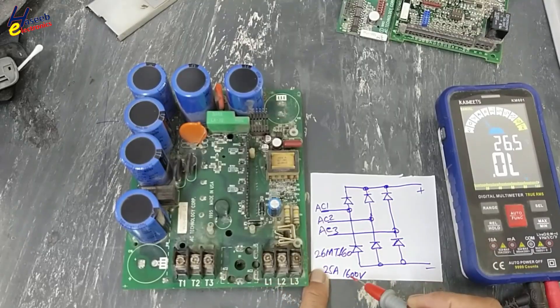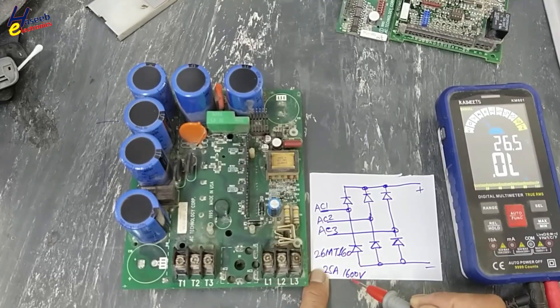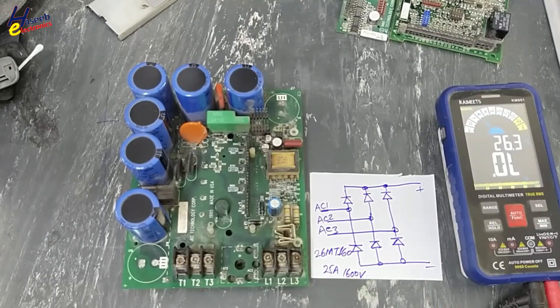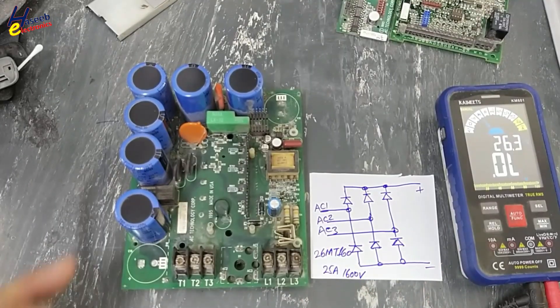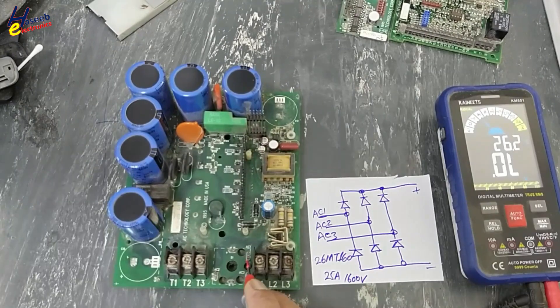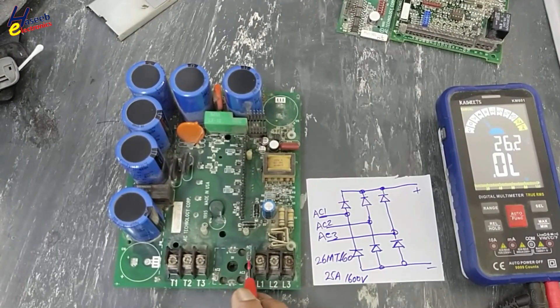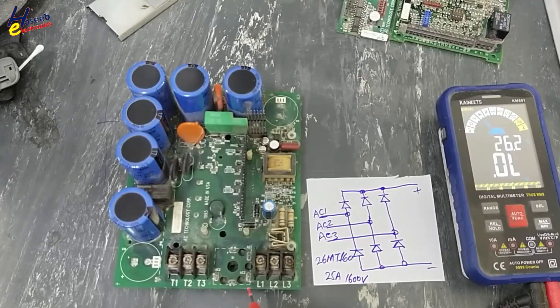Five terminals: one, two, three, four, five. AC1, AC2, AC3 - these are line terminals.